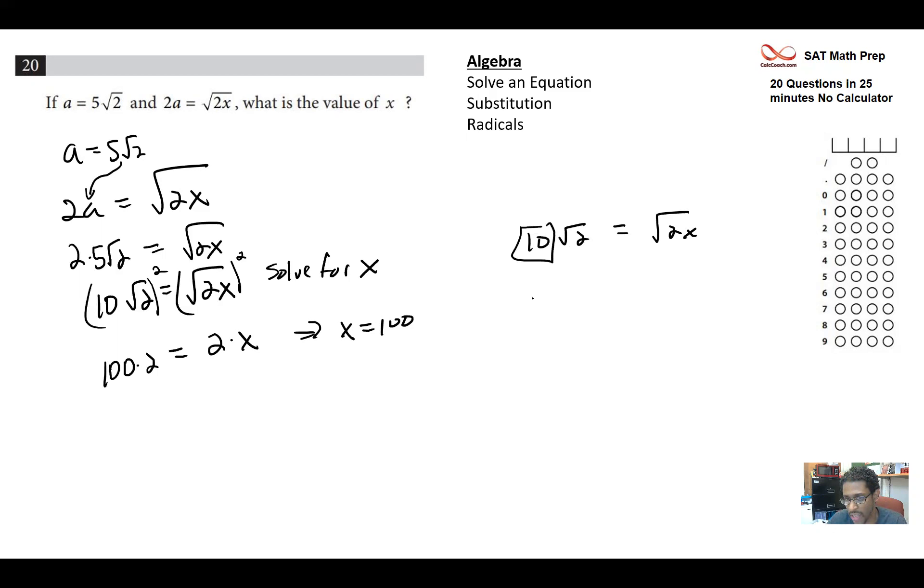We could have done this 10 rad 2 is rad 2x and work this thing backwards. The fact that this 10 is on the outside means that there's 100 that was on the inside. So that's why x is 100.